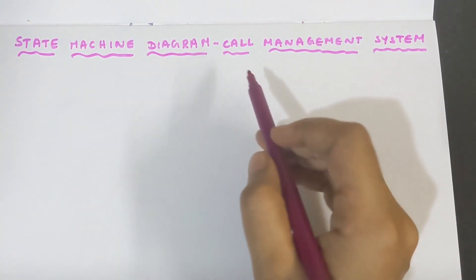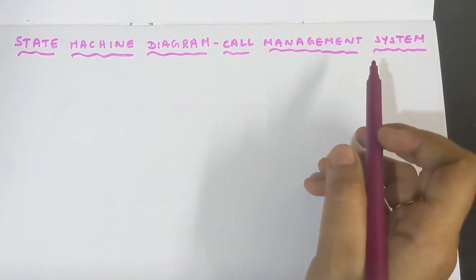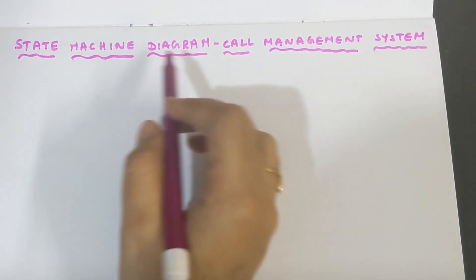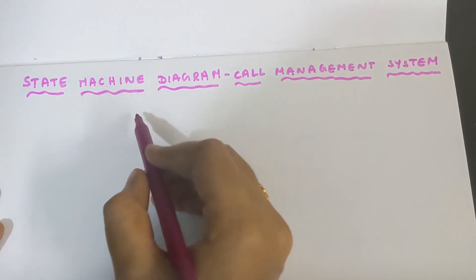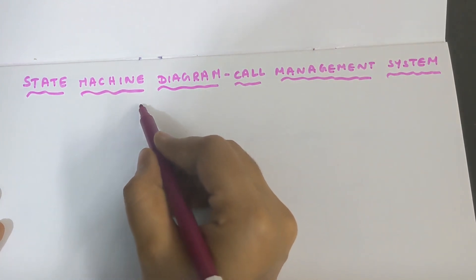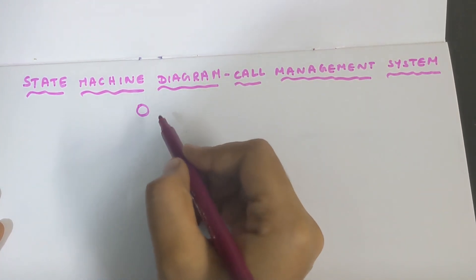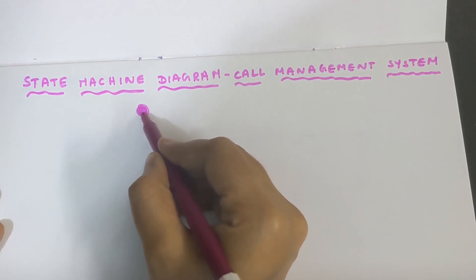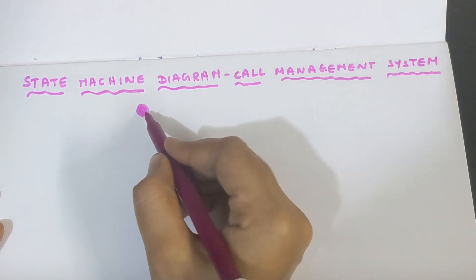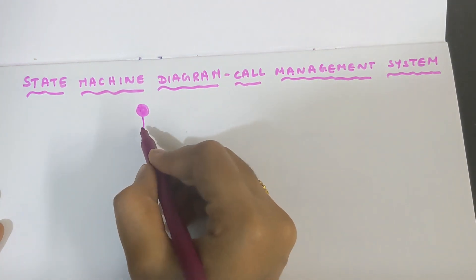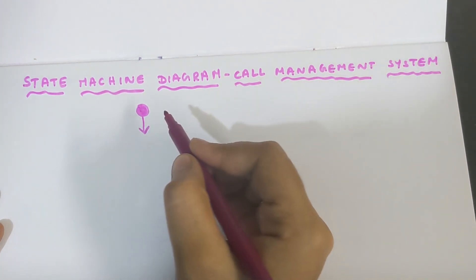So the topic is call management system. The first step in drawing the state machine diagram is to draw the start symbol, which is a circle. Draw a circle and color it inside — bubble it inside. This is the first step. Next, put a downward arrow.